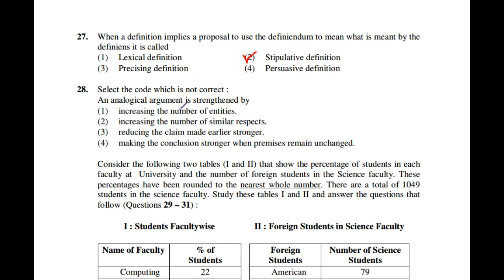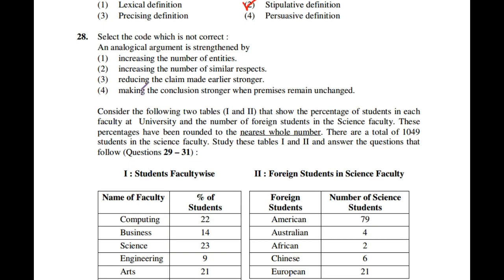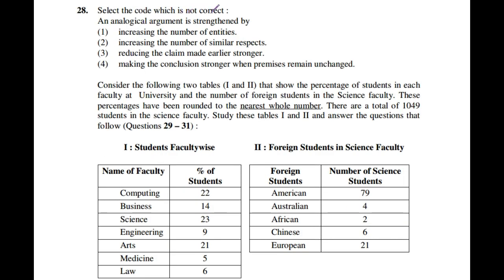Question number 28: Select the statement which is NOT correct about an analogical argument. An analogical argument is strengthened by increasing similar respects, reducing the claim made, and having stronger premises. Making the conclusion stronger when premises remain unchanged is NOT a way to strengthen an analogical argument. So the correct option — the one that is not correct — is the fourth one.